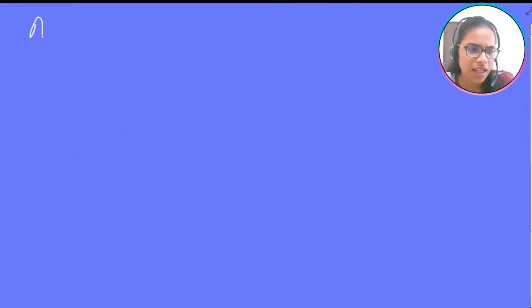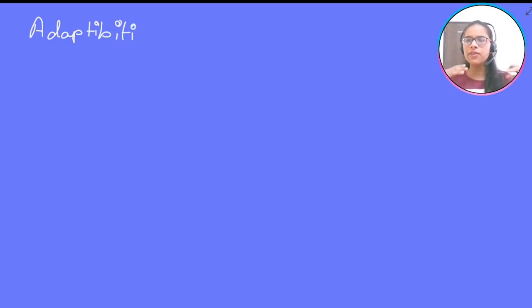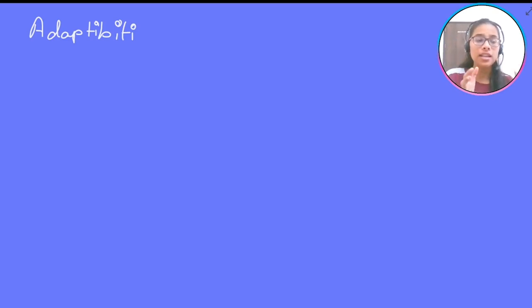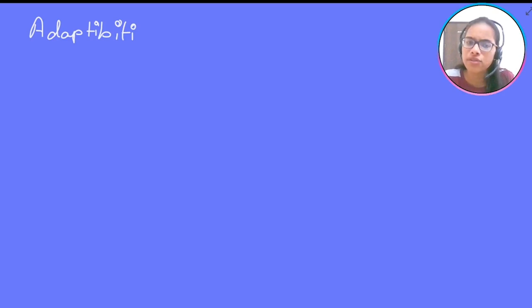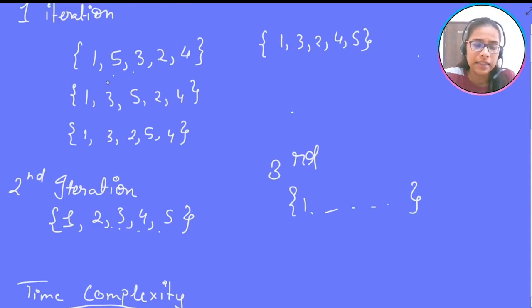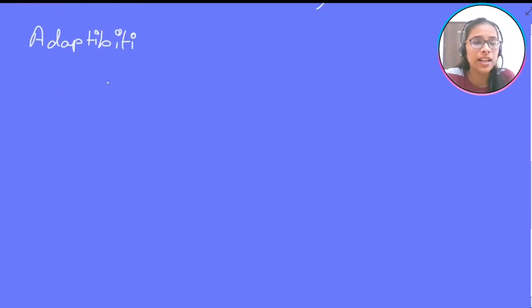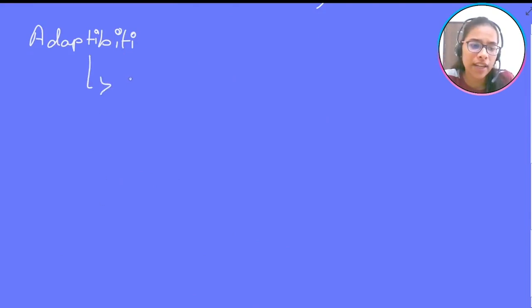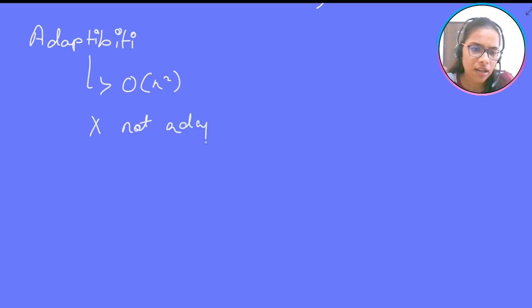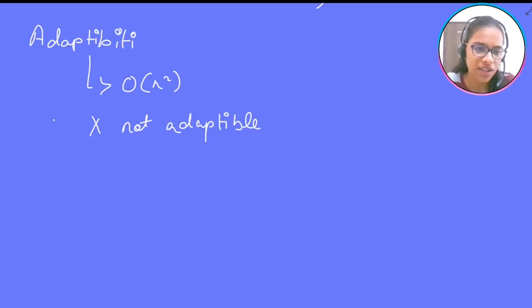Now let's discuss adaptability. What is adaptability? If an algorithm is adaptable, it means it will take less time for a simpler or already-sorted input than for a complex input. If the array is already sorted but the computer doesn't know, it will still compare all elements and run for O(n²) time. So is bubble sort adaptable? No, this algorithm is not adaptable — though we can make it more adaptable, which we'll discuss later.